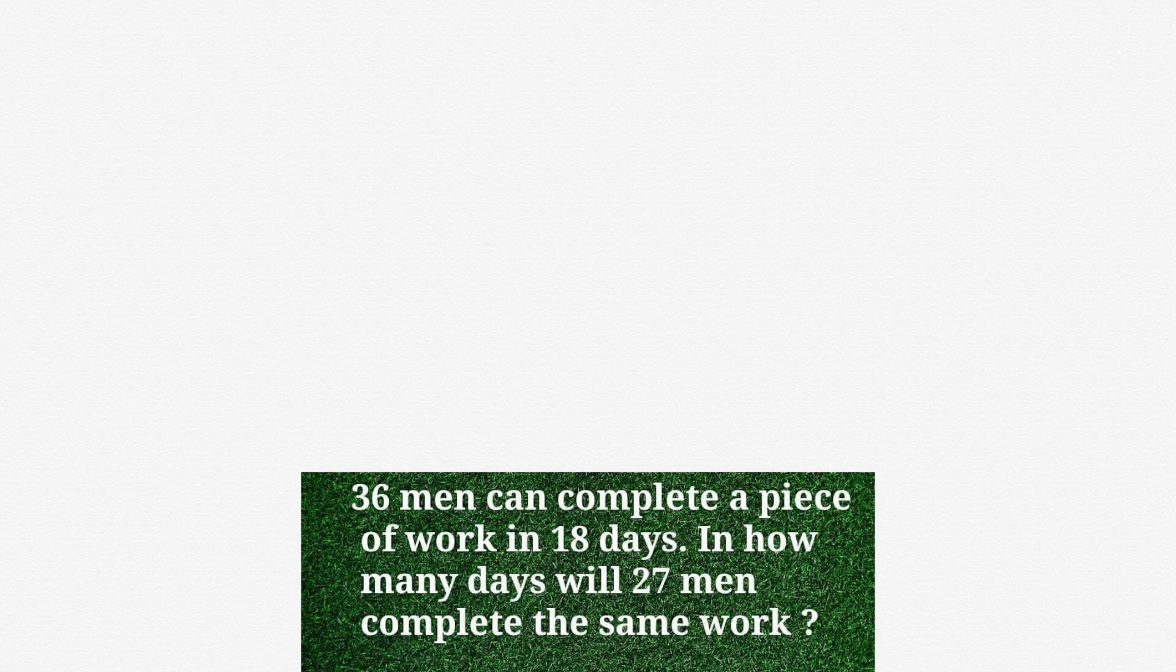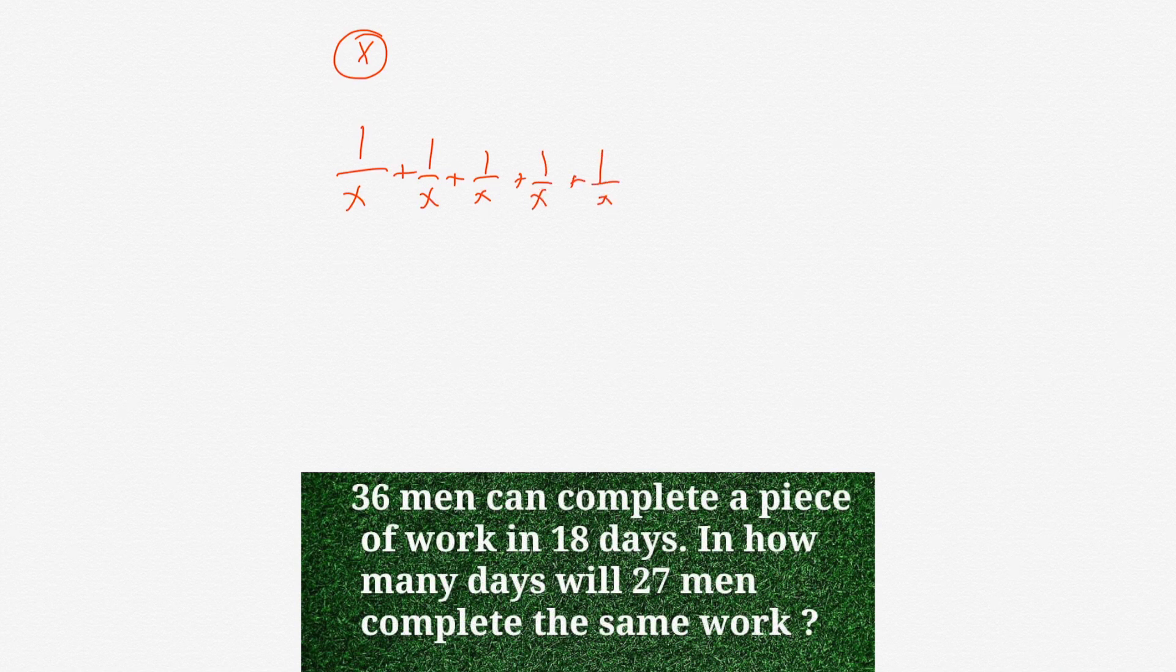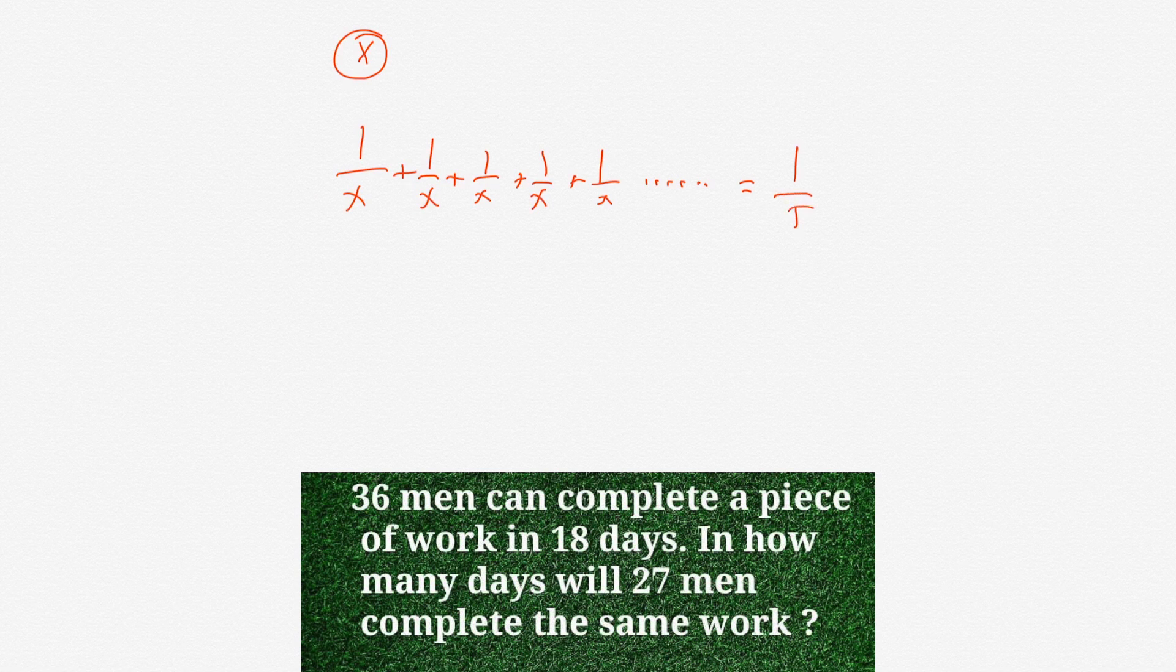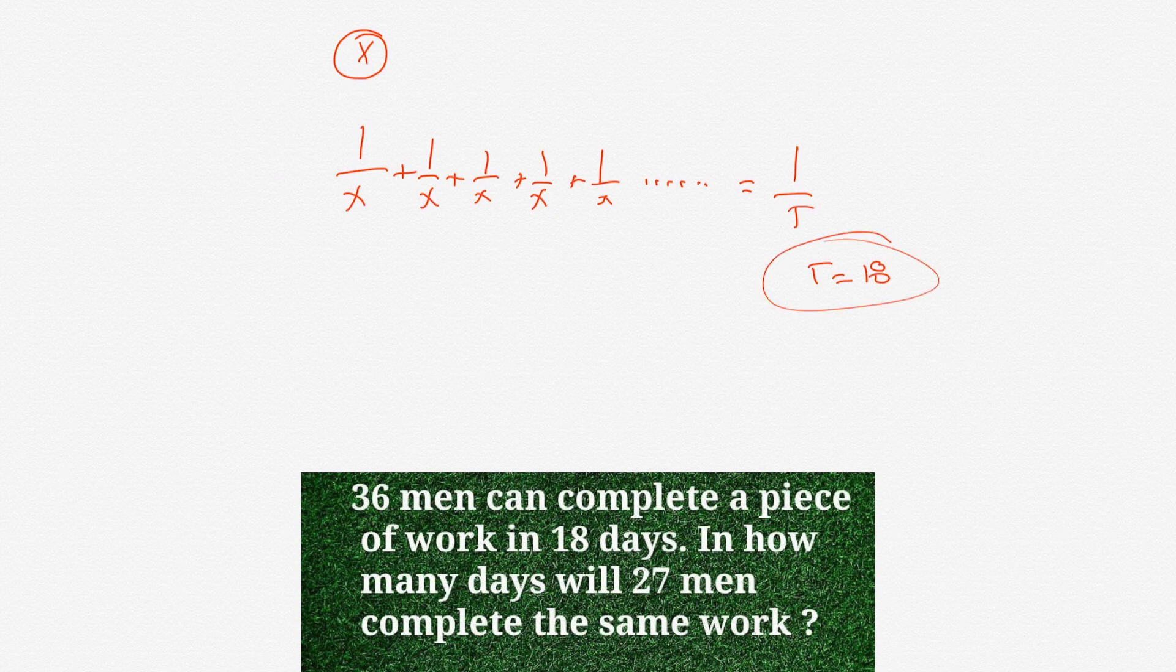Now, what I want to do is the actual problem. What we have here is 36 men can complete a work in 18 days. So, if you think about it, 36 men, but they're all the same. You could assume that they're all the same. So, you can call them all x. So we have 1/x, and we have that 36 times. We have 36 people. So, imagine 1/x 36 times. And all of that is going to equal 1/t. But we know the t. The t is 18. The time is 18.